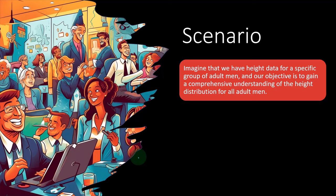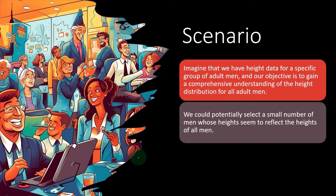So we could potentially select a small number of men whose heights seem to reflect the heights of all men. You might say, hey look, if I was to take a sample, the question of course will then be, how am I going to take a sample of men? I can't test all men in the population to see what the average height of men are. But what I could do is take a sample. Well, how am I going to take the sample?